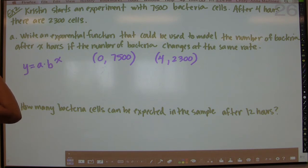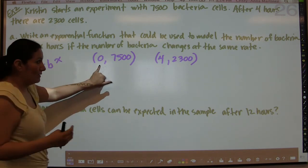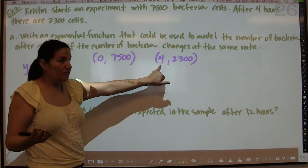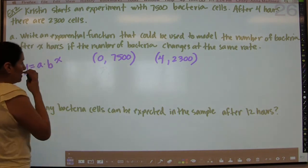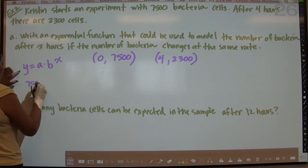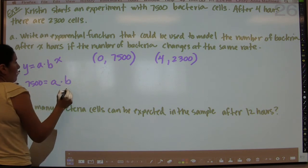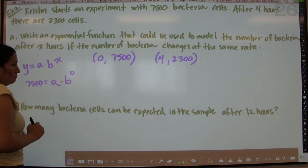This is writing an exponential function that could be used to model the number of bacteria after x hours. At the start, x is 0. 4 hours later, x is 4. All we have to do is plug in this information here. So the y value is 7,500. We don't know what a is. We don't know what b is. But we know that x is 0.